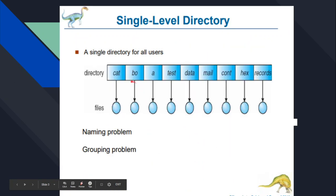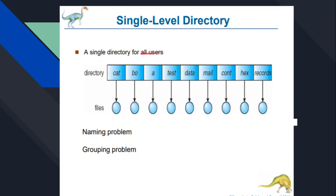There are different types of directory structure. The first one is a single level directory structure, where there is a single directory for all the users. We can see the directory with users, and everything is in this common directory for all users, from which they have their files.